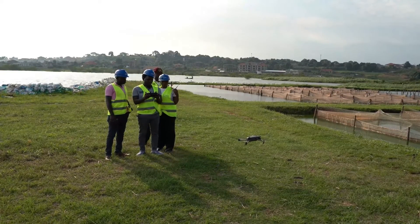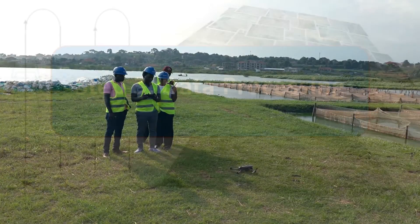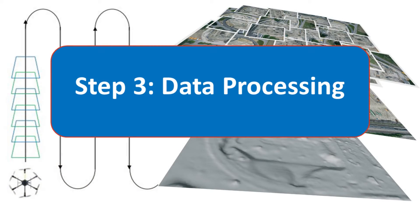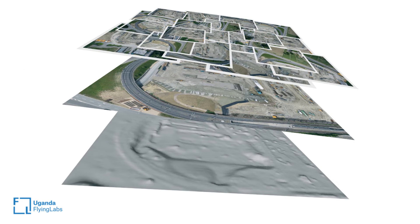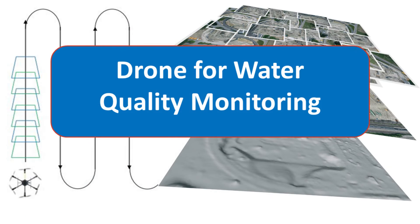Once the flight is complete and the drone has returned safely with all data collected, the next step is step three: data processing. This step involves downloading data and using specialized software to combine and merge all images into a single image called the orthomosaic. There are several other processing steps that can be used to create other types of products, depending on the main purpose of the flight as determined during the initial planning process, and may require use of specialized sensors like multispectral, radar, and others.